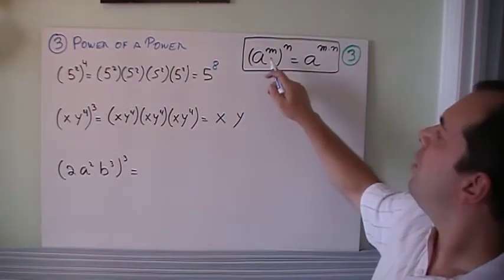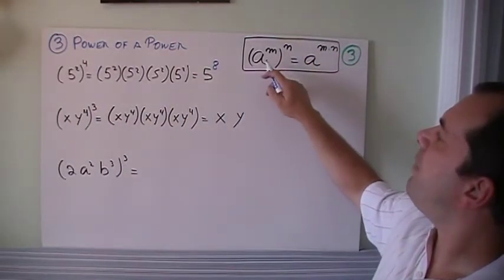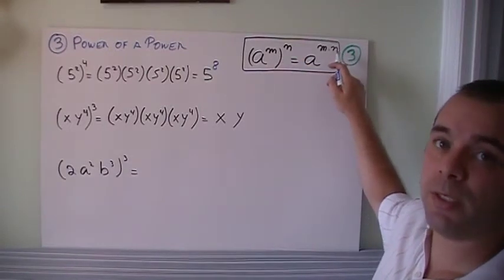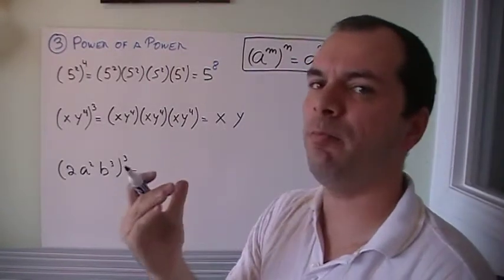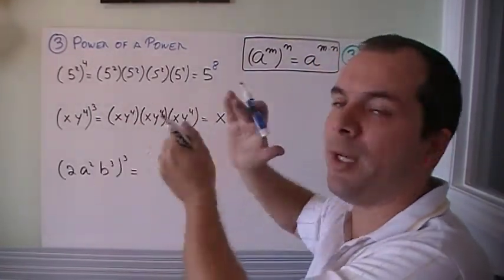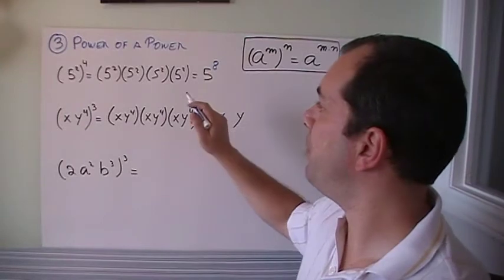So basically, the rule is power of a power. If I have a base multiplied by the power to the power, I multiply the exponents. But I wish you didn't memorize it. You just kind of understood it, that if I got this to this, I got this so many times, I can just count them, right?